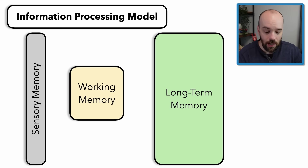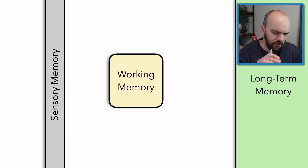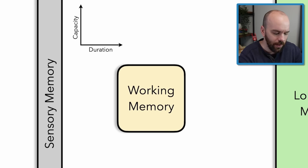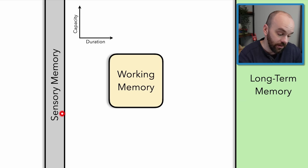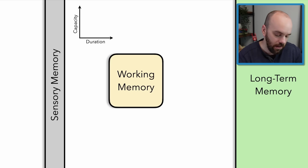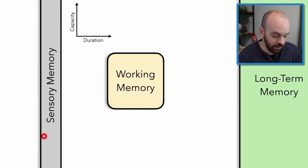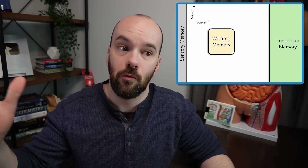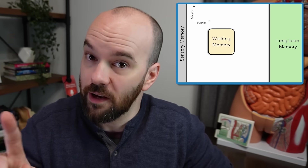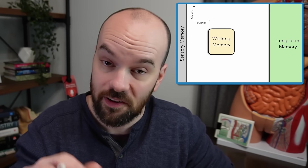I've got three different shapes for the boxes here, and that's for a reason. Think of it like two axes: a capacity axis and a duration axis. The taller the box, the greater the capacity. Sensory memory has a kind of infinite capacity, long-term memory also has an infinite capacity, but working memory has a very limited capacity. On the horizontal axis, duration: sensory memory doesn't last long at all, working memory lasts a little while, but long-term memory goes off the edge — things can stay there for the rest of our lives. But not everything that goes into long-term memory stays there.